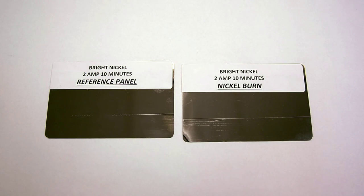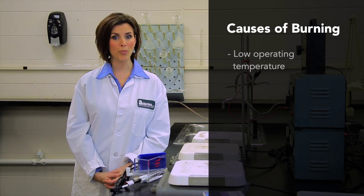This panel illustrates burning. Notice the extremely dull gray area. The principal causes of burning are low chloride, low operating temperature, low plating salt concentrations, and high pH.